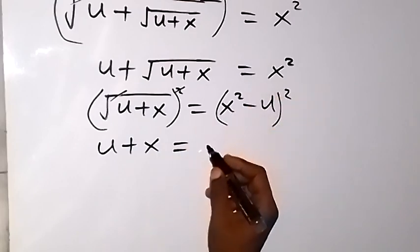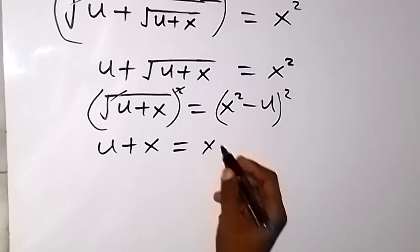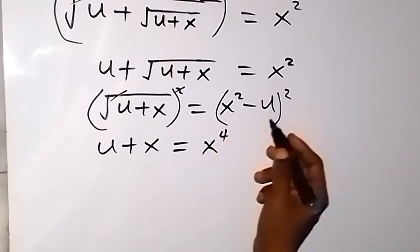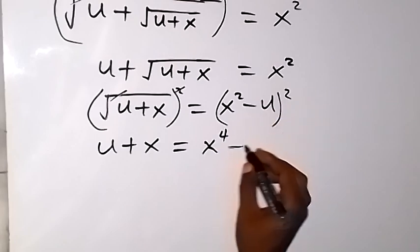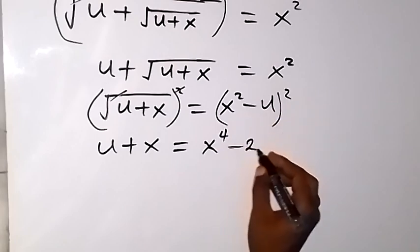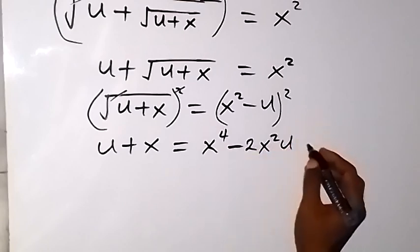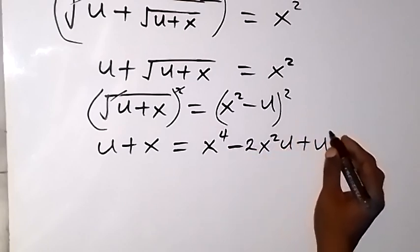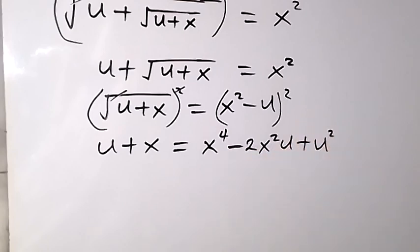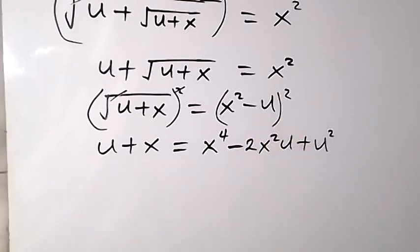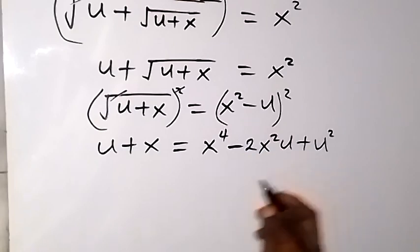We expand the right side: x squared all squared gives x raised to power 4, then 2 times x squared times negative u gives minus 2x squared u, and negative u squared gives plus u squared. This is the expansion on the right side.